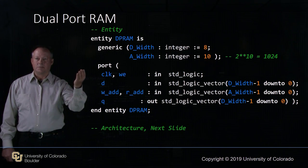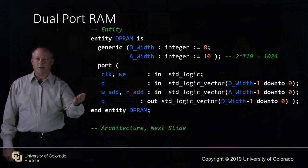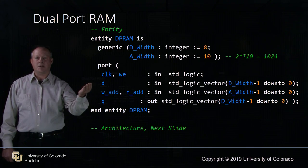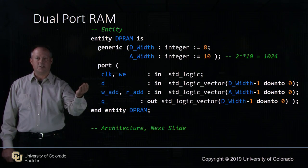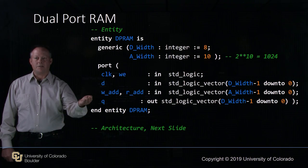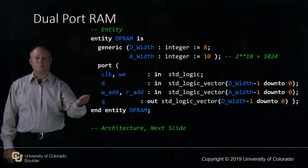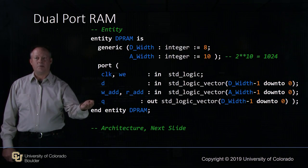Here are our ports for our dual port memory: clock, write enable, d as our input of data width 8 minus 1 down to 0 — so 7 down to 0 — our write address and our read address, which are set as bus sizes of address width 10 minus 1 down to 0, and our Q output bus.